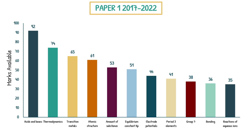If you haven't seen it already, I've already done this analysis from 2017 to 2022 in a previous video. And these are the results. At number one we have acids and bases, then thermodynamics, transition metals, atomic structure, amount of substance, etc. This is the number of marks available across the six papers — acids and bases received 92, thermodynamics received 74, and so on. I'm not going to go into detail here; check out my previous video linked in the description. But let's look at how things changed in 2023.